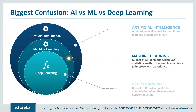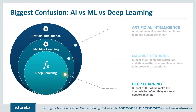Deep learning is a subset of machine learning where similar machine learning algorithms are used to train deep neural networks, so as to achieve better accuracy in those cases where the former was not performing up to the mark. So AI, machine learning, and deep learning are all three different things.